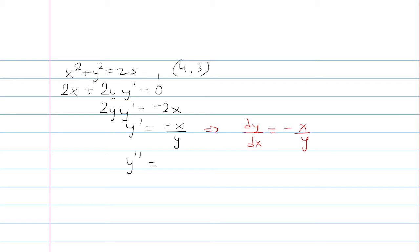Here I have to use the quotient rule. The derivative of the top is negative 1 times the bottom minus the derivative of the bottom times the top, all over the bottom squared.